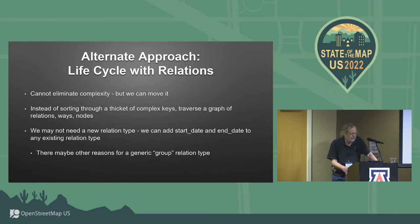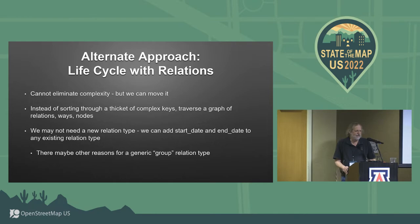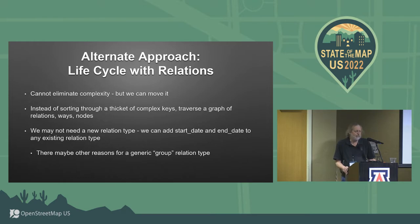If we're using relations, instead of sorting through a thicket of nasty keys that have to be parsed, we can traverse a graph of relations, ways, and nodes. I'm a computer scientist — graph traversal is something I get. I'm much happier writing a graph traversal algorithm than trying to parse these little keys. We may not even need a new relation type; we can add start date and end date to any existing relation type. Open Historical Map does currently support some of these, though not all — it's an open ticket with gradual incremental progress.